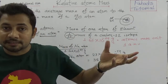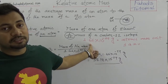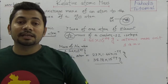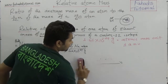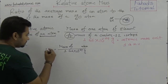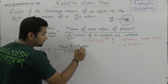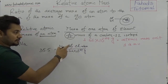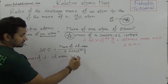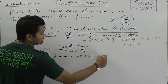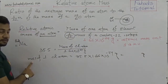The relative atomic mass of chlorine is 35.5. So the mass of one chlorine atom divided by 1.66 × 10⁻²⁴ gives us 35.5. So the mass of one chlorine atom is 35.5 × 1.66 × 10⁻²⁴ grams. Again, we will get another value — and that is the mass of one chlorine atom.